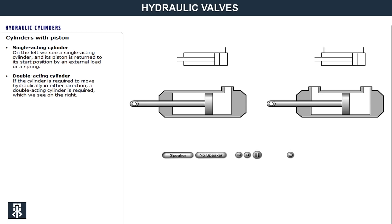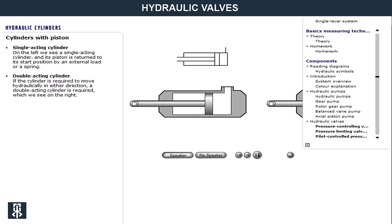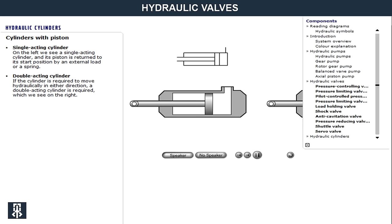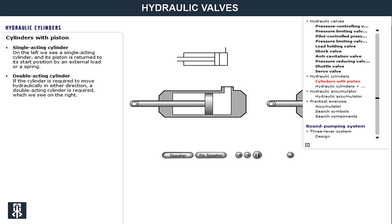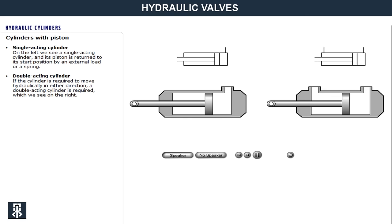On the left we see a single acting cylinder. Its piston is returned to its start position by an external load or a spring. The oil can be supplied to the cylinder on the piston rod side or on the opposite side.